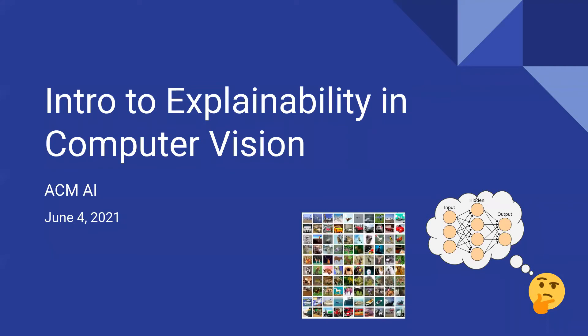This workshop is an intro to explainability in computer vision. The official title is slightly misleading — I said 'explainable your vision' — that's certainly one kind of topic in explainability in computer vision, and we'll make the distinction in this workshop. More generally, the workshop is about different techniques used to explain how image classification models arrive at their predictions.